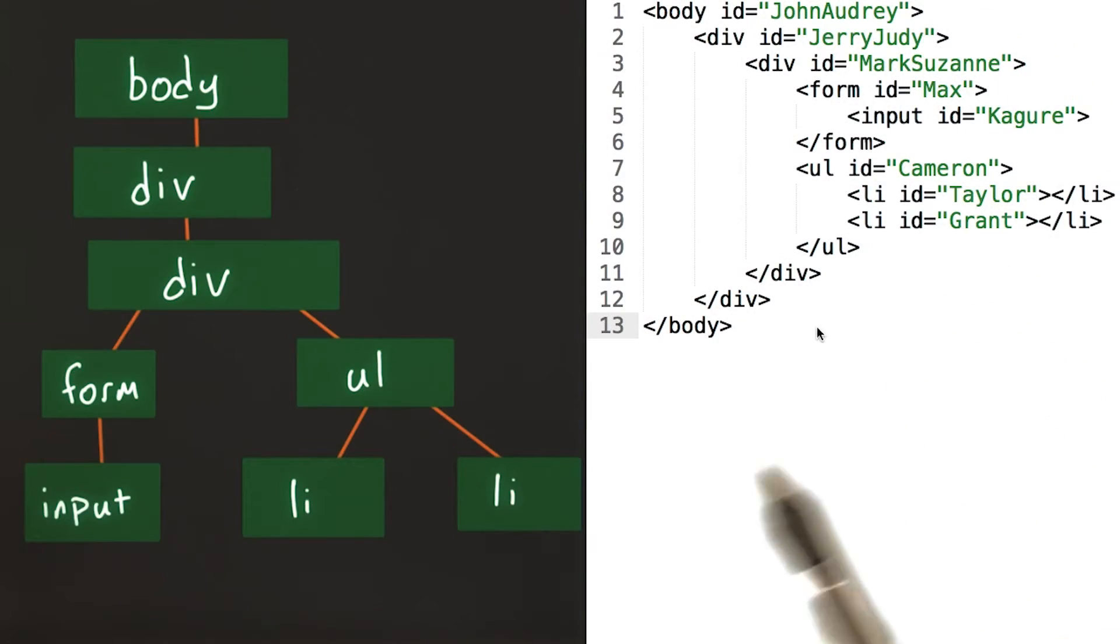This HTML would map to the DOM tree you see over here. Here, the body's at the top level, and it has some divs nested underneath it.